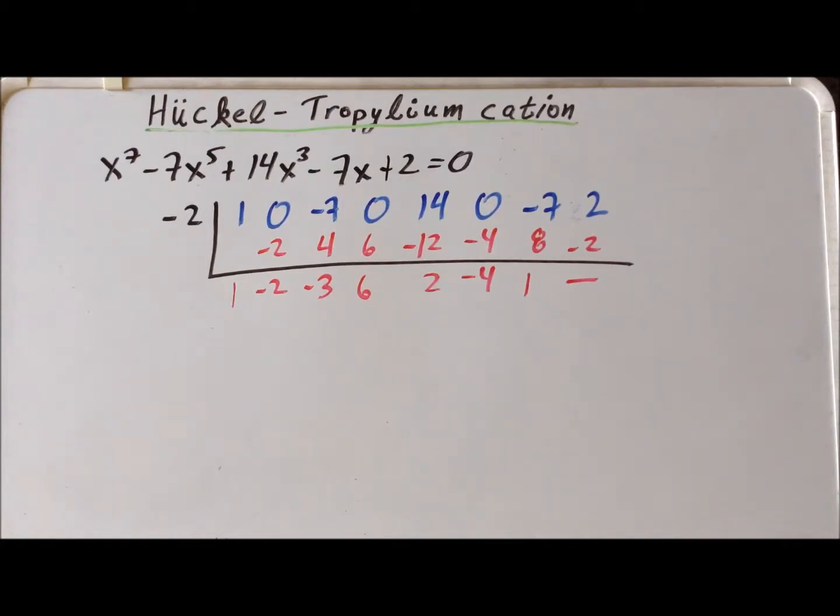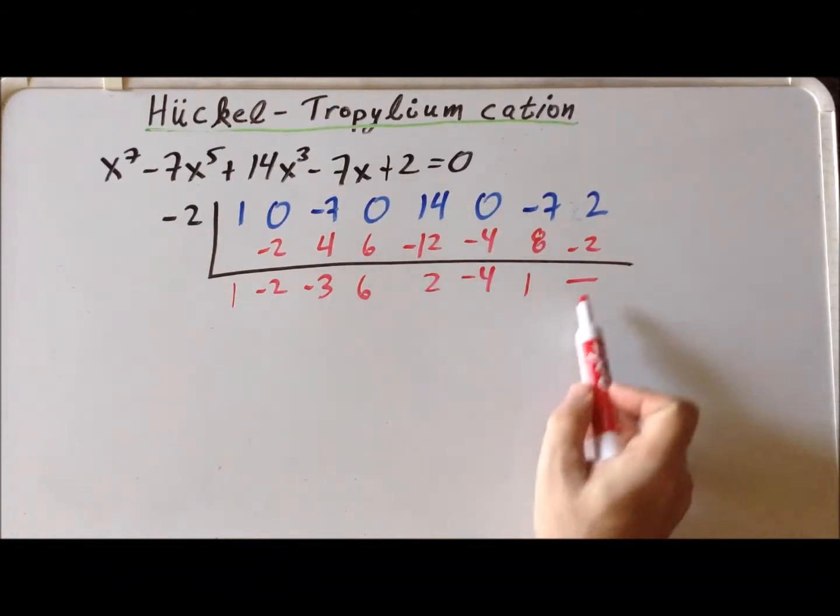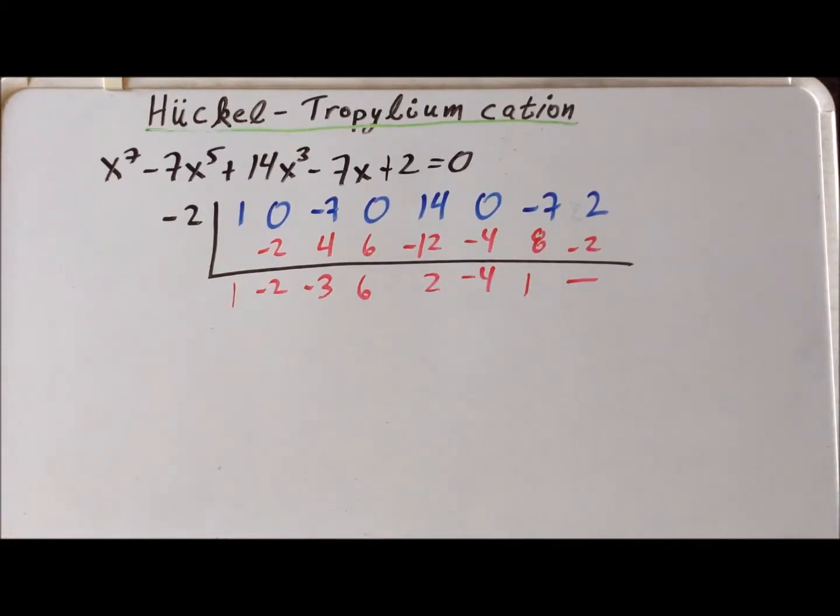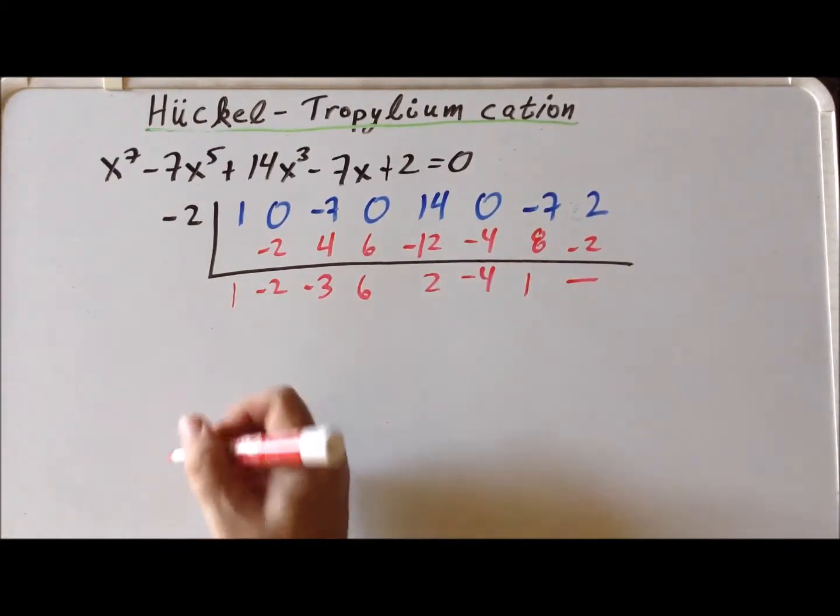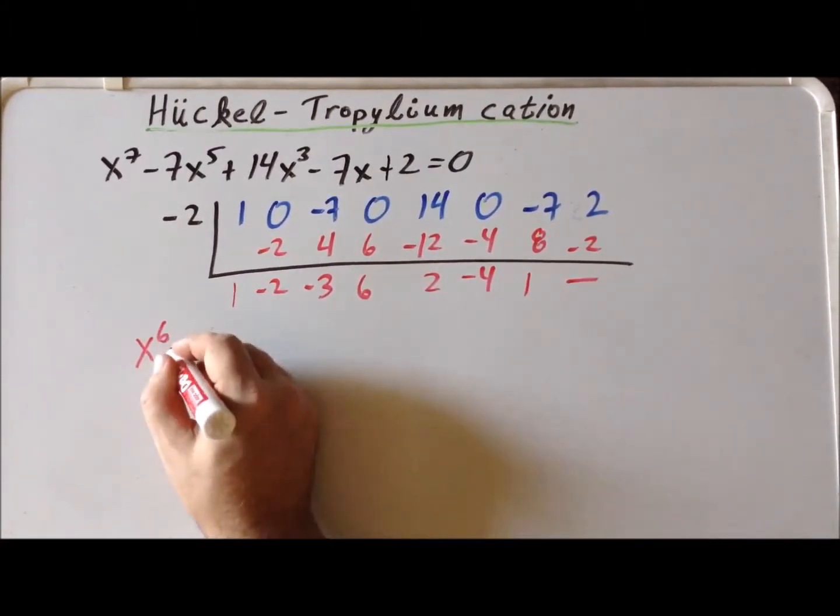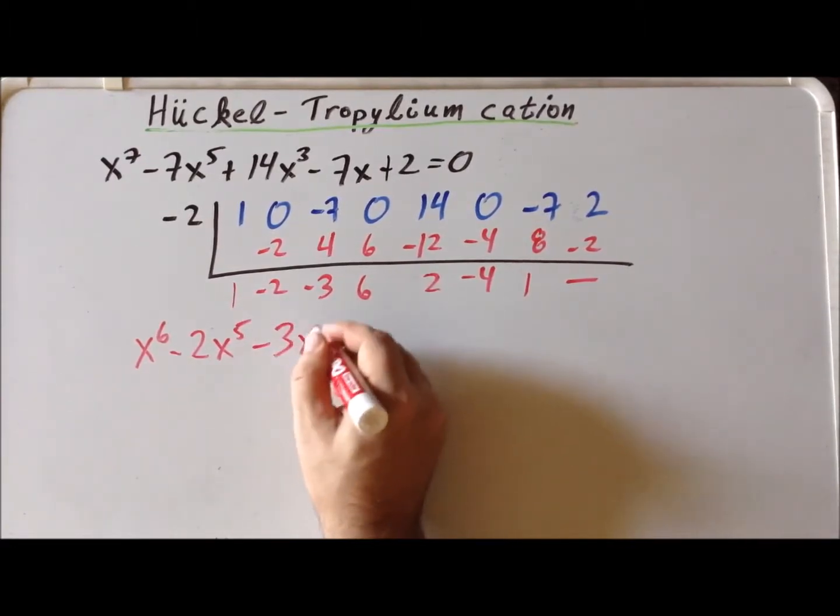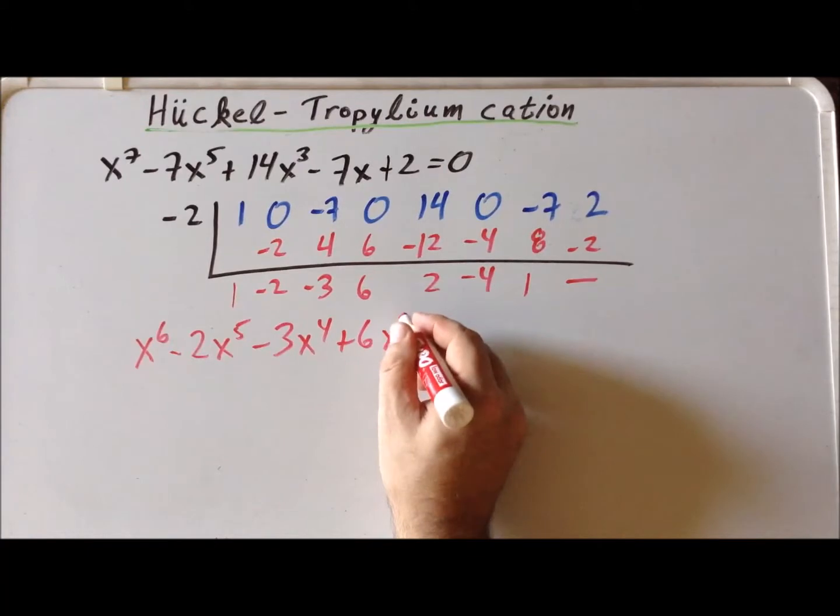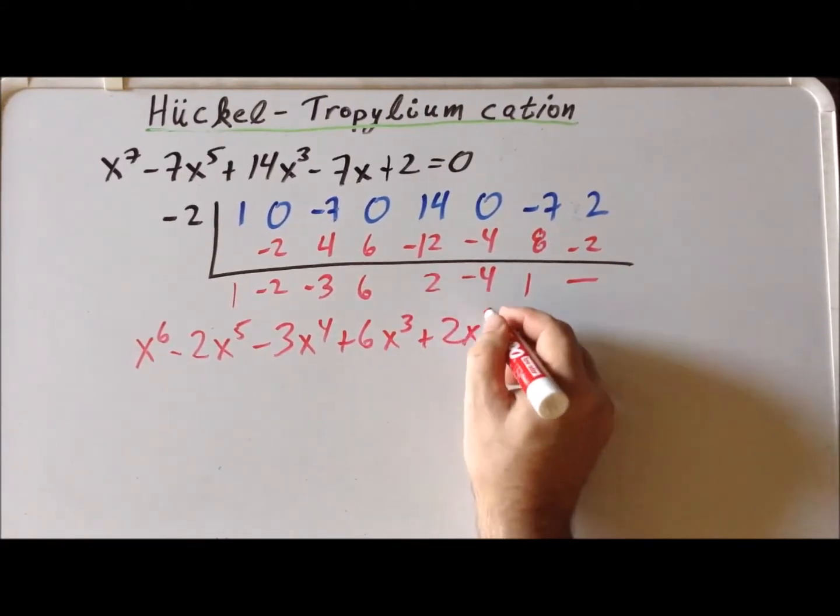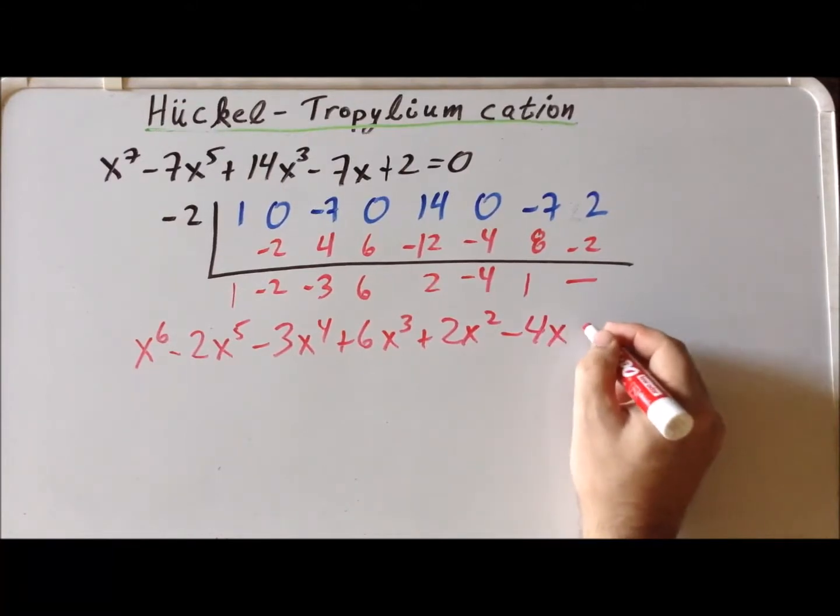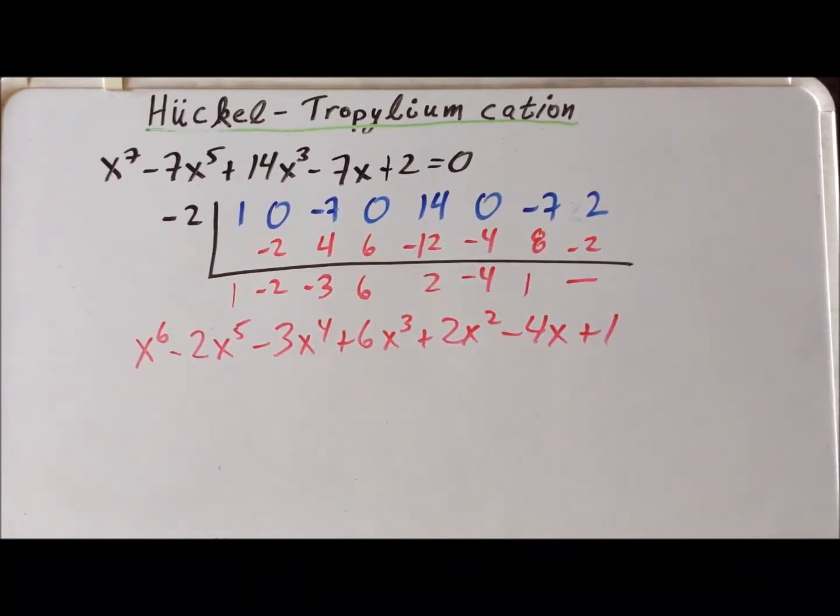More than that, we can actually write down another factor. Because these are the coefficients of a sixth order polynomial, which is x to the sixth minus two x to the fifth minus three x to the fourth plus six x cubed plus two x squared minus four x plus one. If we were to apply synthetic division to this particular polynomial with integer roots, it would fail repeatedly.